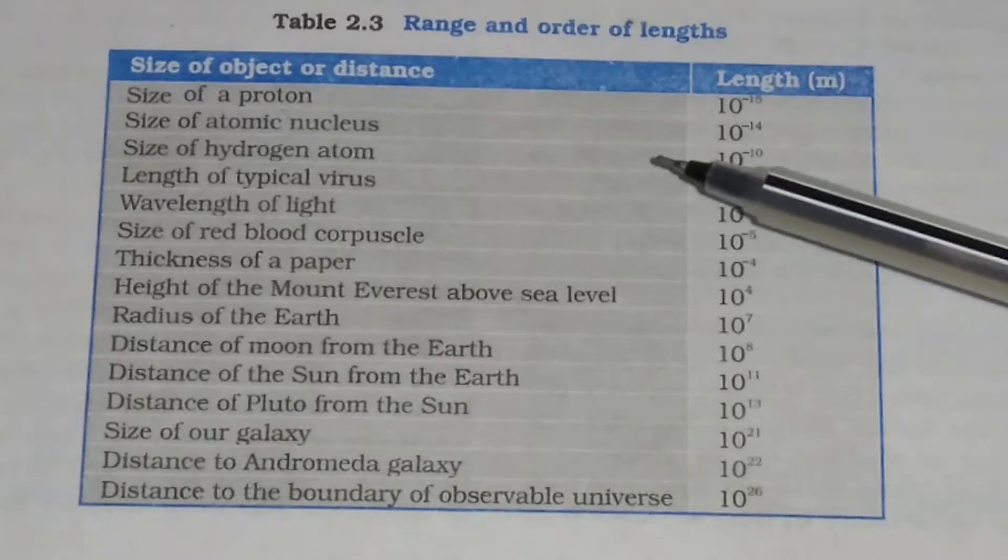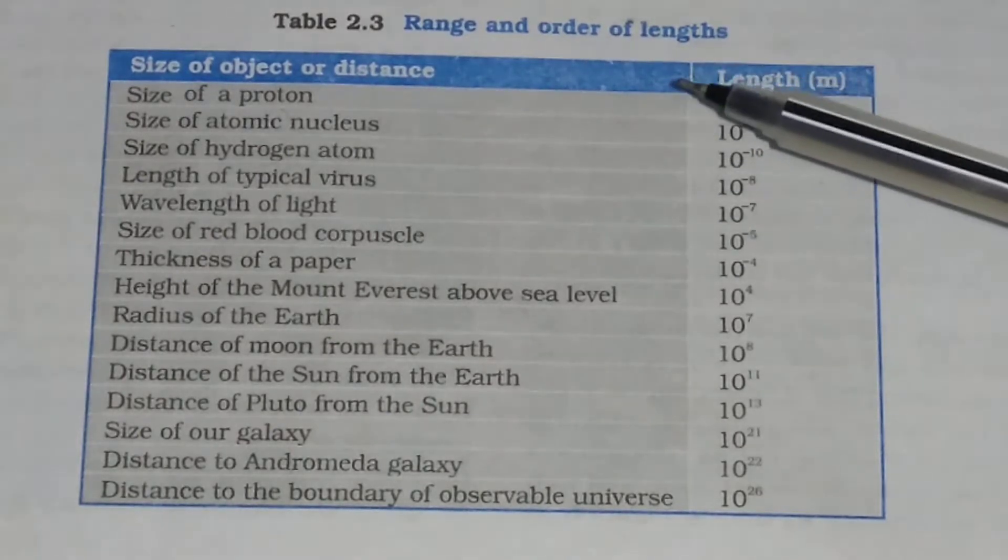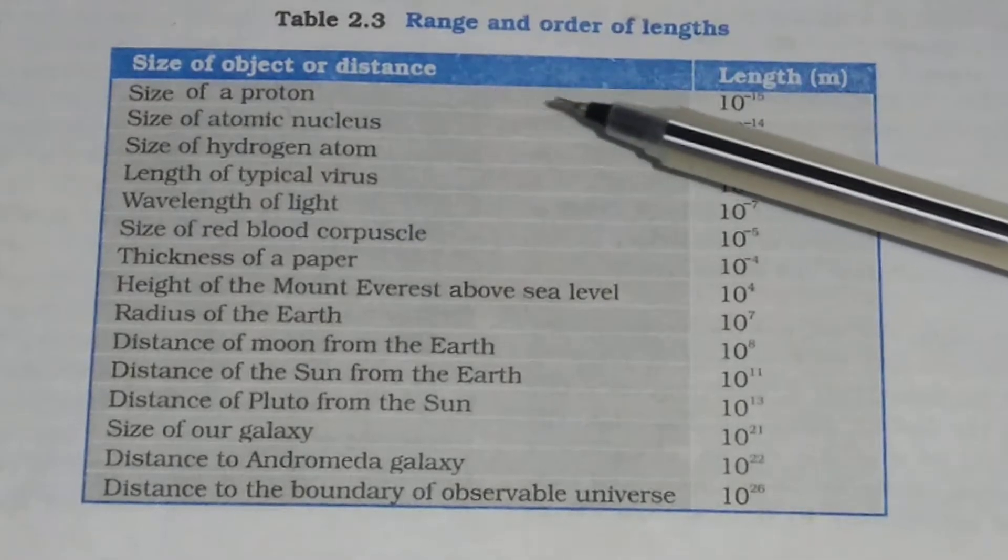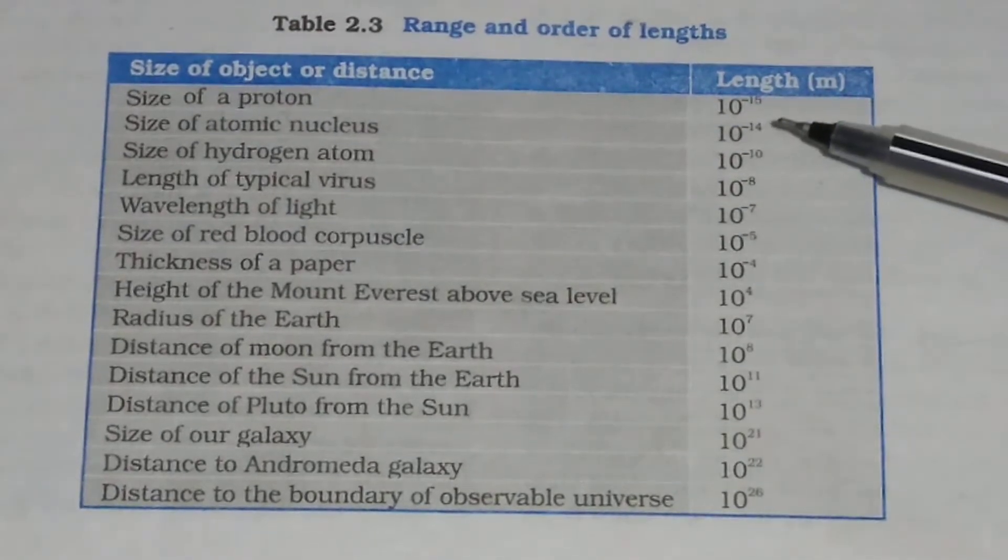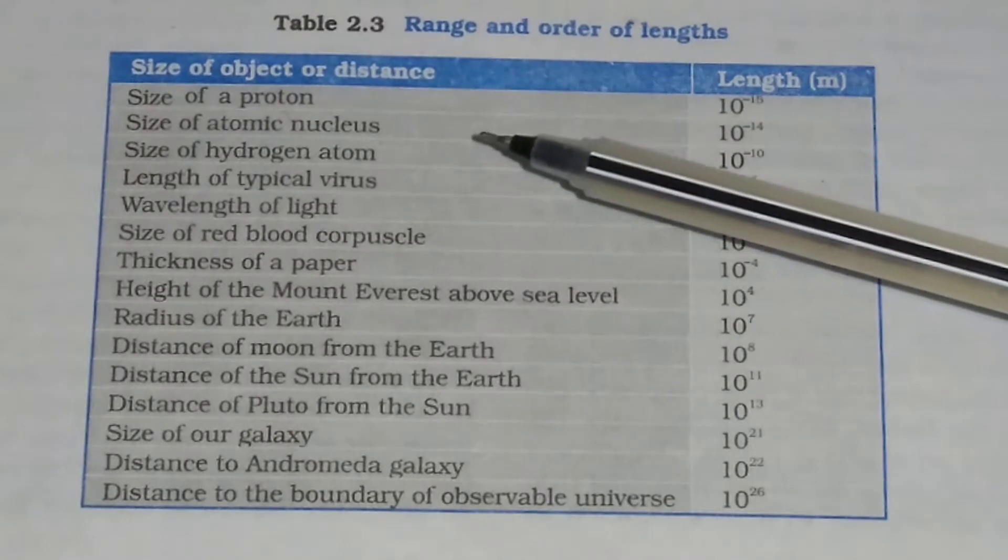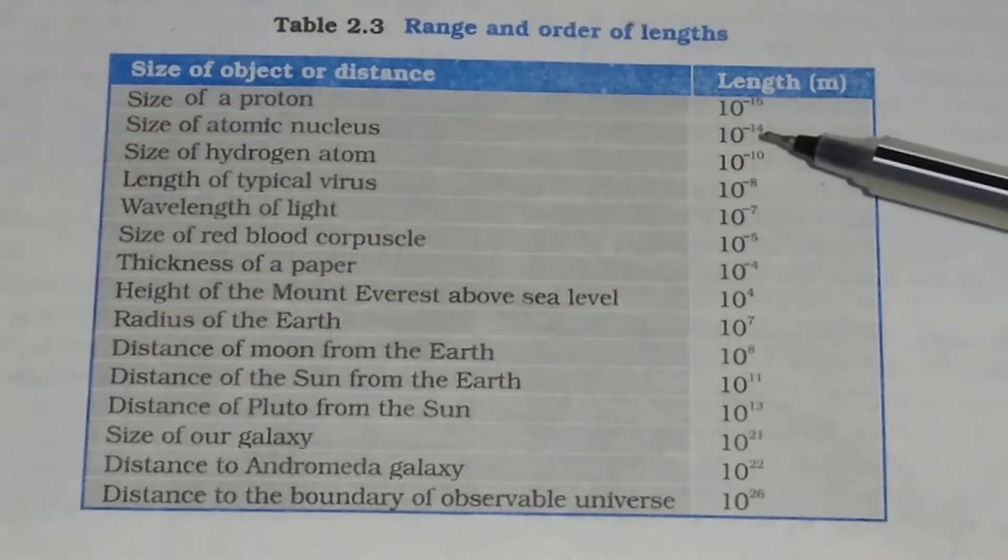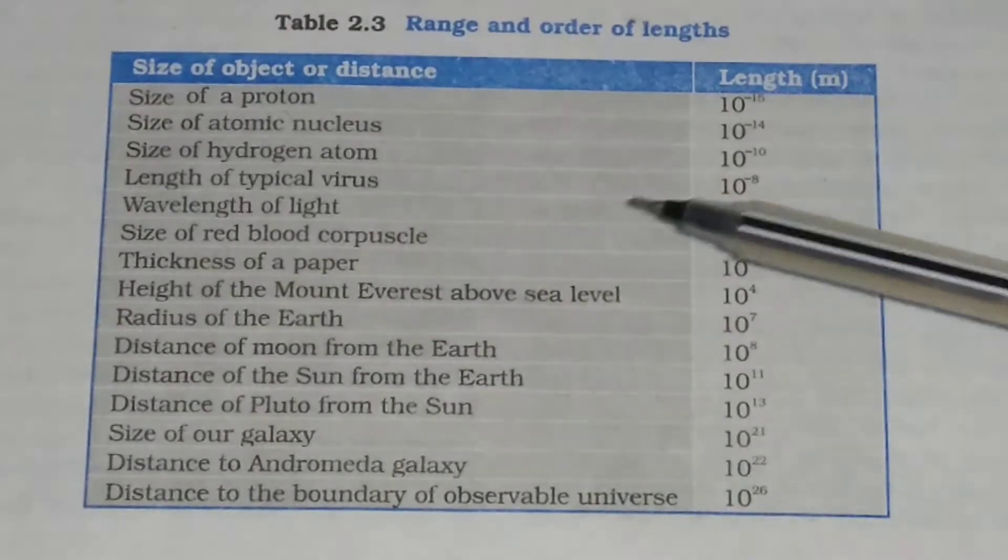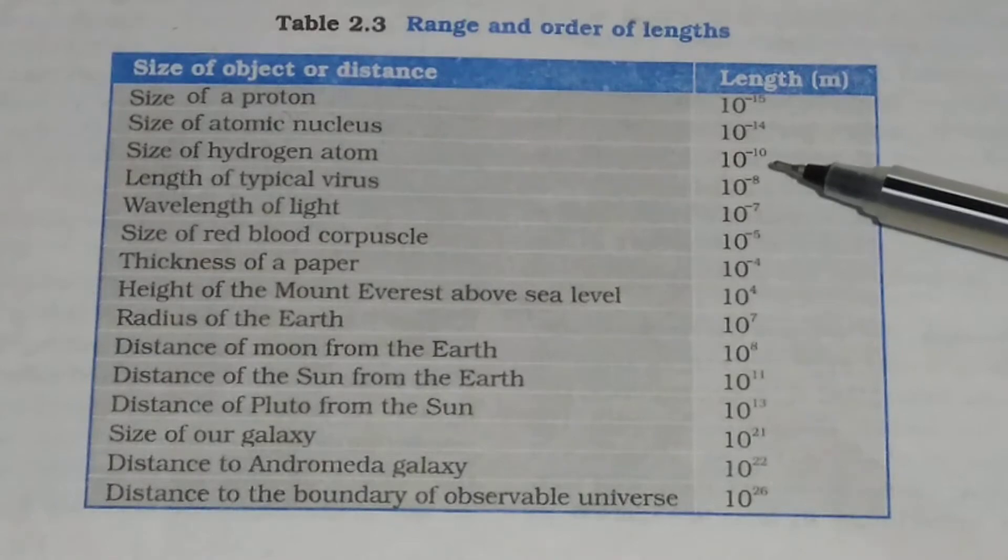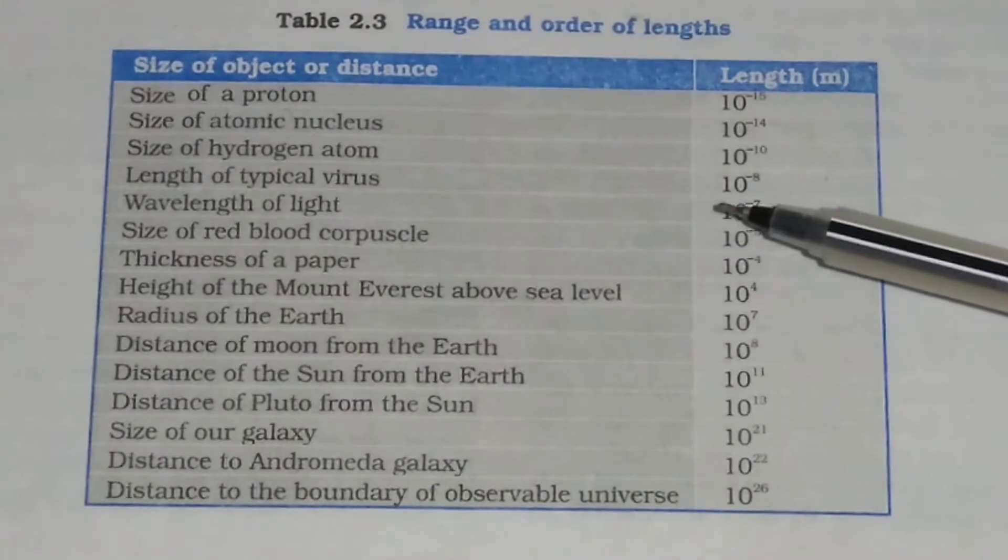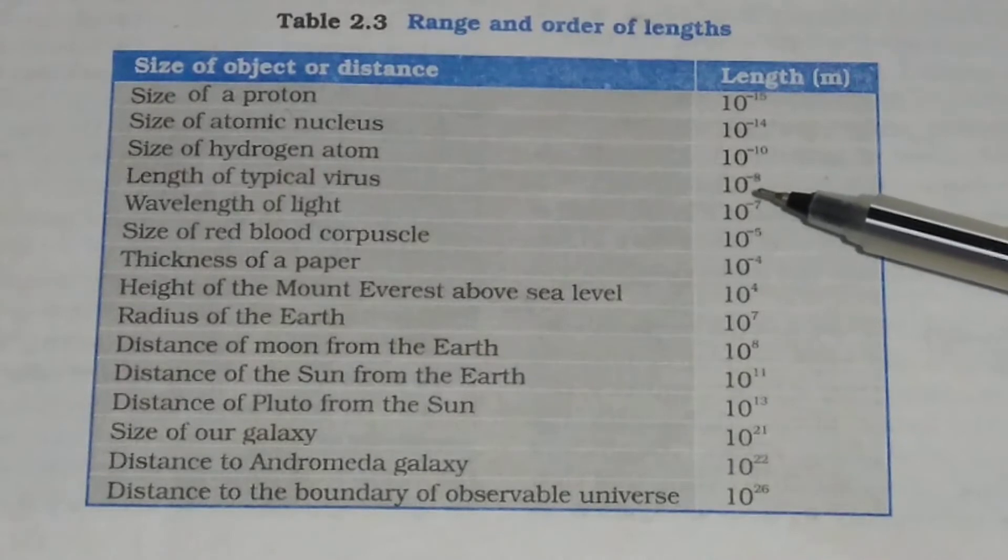In this table, it is given the size of some objects. Size of the proton is of the order of 10 to the power minus 15 meter. Size of nucleus is of the order of 10 to the power minus 14 meter. Similarly, size of hydrogen atom is 10 to the power minus 10 meter. Size or length of typical virus is 10 to the power minus 8 meter.